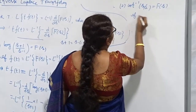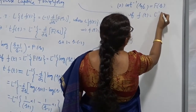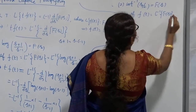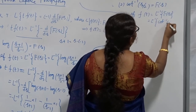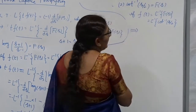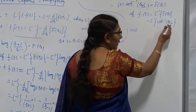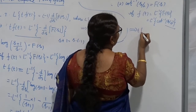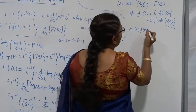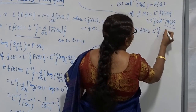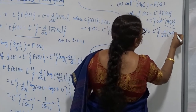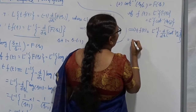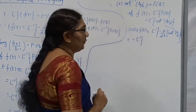If f(t) = L⁻¹ of F(s), and F(s) = cot⁻¹(s/2), then t·f(t) is nothing but L⁻¹ of minus the first derivative of cot⁻¹(s/2). We don't have any standard function corresponding to cot⁻¹(s/2) directly. Therefore, differentiating: the derivative of cot⁻¹ is −1/(x²+1), so here it becomes −1/((s/2)²+1) times the derivative of s/2 with respect to s.